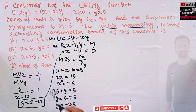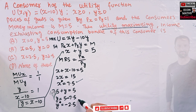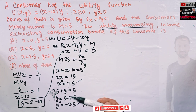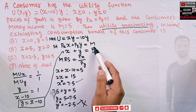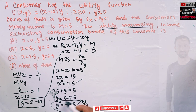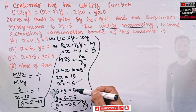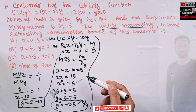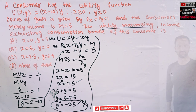We got optimal values of x = 7.5 and y = negative 2.5. But can a consumer consume negative units of any commodity? No. So this interior solution is infeasible. Even though the budget constraint is technically satisfied, consuming a negative quantity is not possible, so this method does not yield the correct answer here.